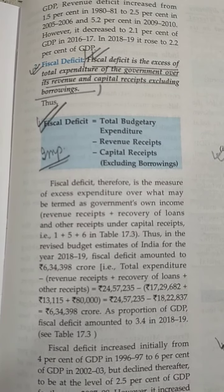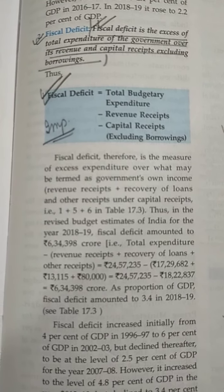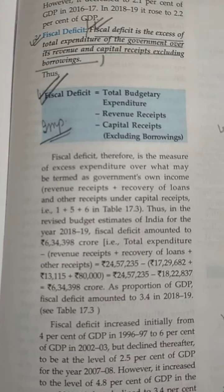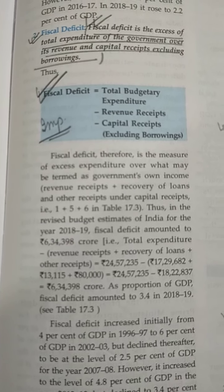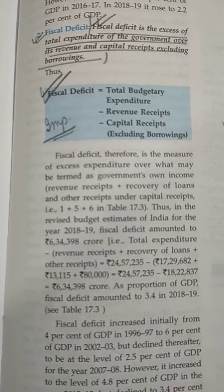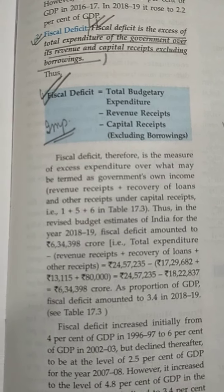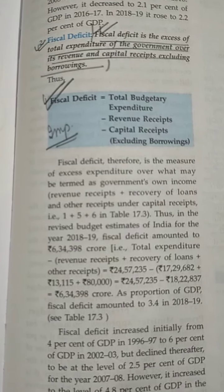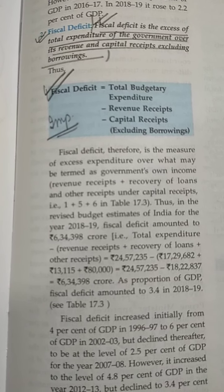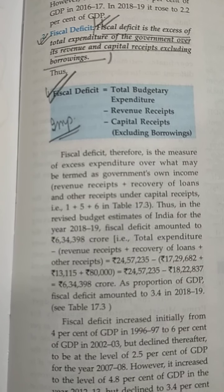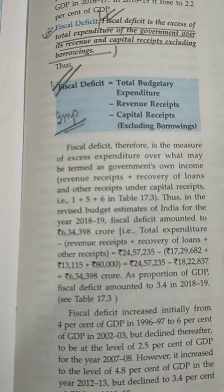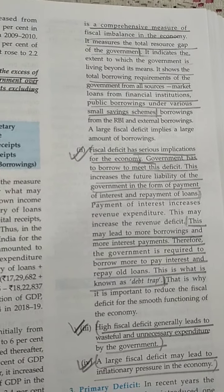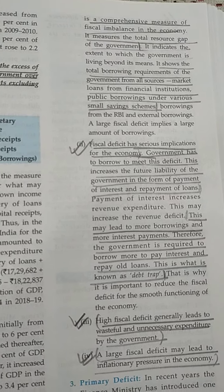Coming to the next topic — fiscal deficit. In revenue deficit we only talked about the revenue portion; in fiscal deficit we'll be talking about the whole deficit, that is capital and revenue. Fiscal deficit is the excess of total expenditure of the government over its revenue and capital receipts, excluding borrowing.